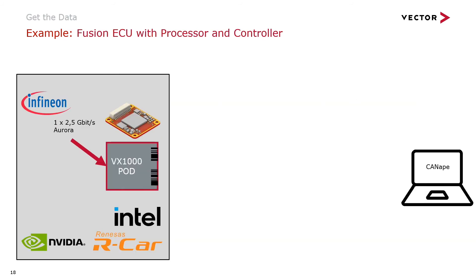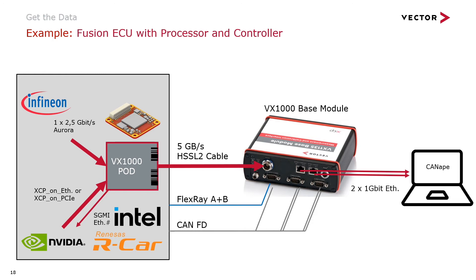Another example is a fusion ECU, which is much more complex than a traditional ECU because it has both a controller and a processor inside. But the solution is the same: we insert a VX1000 pod, transmit all data to a base module, and the base module sends the data to Canopy.